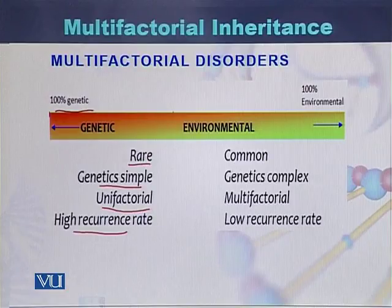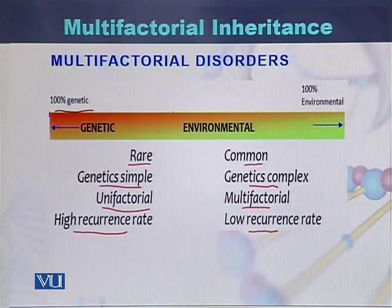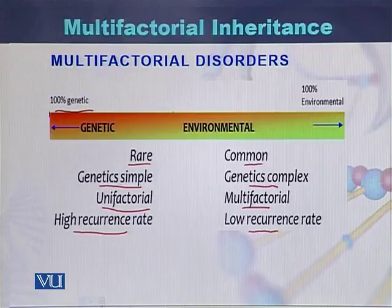In multifactorial diseases, they are common in nature, their genetics is complex, and they have a low recurrence rate. On one hand there are diseases which are hundred percent genetic, and on the other hand are diseases which are hundred percent environmental. Multifactorial diseases are those in which there is some role of the genes and some role of the environment.